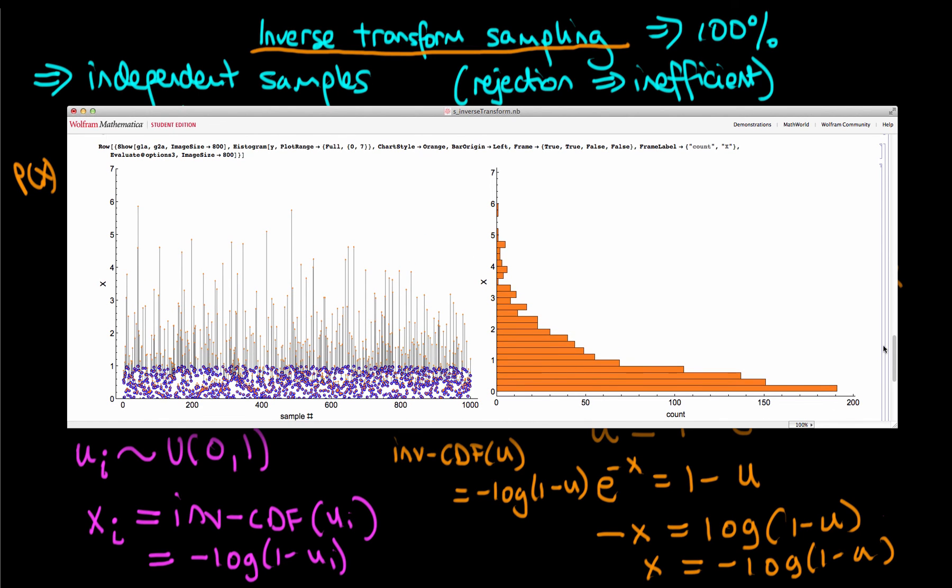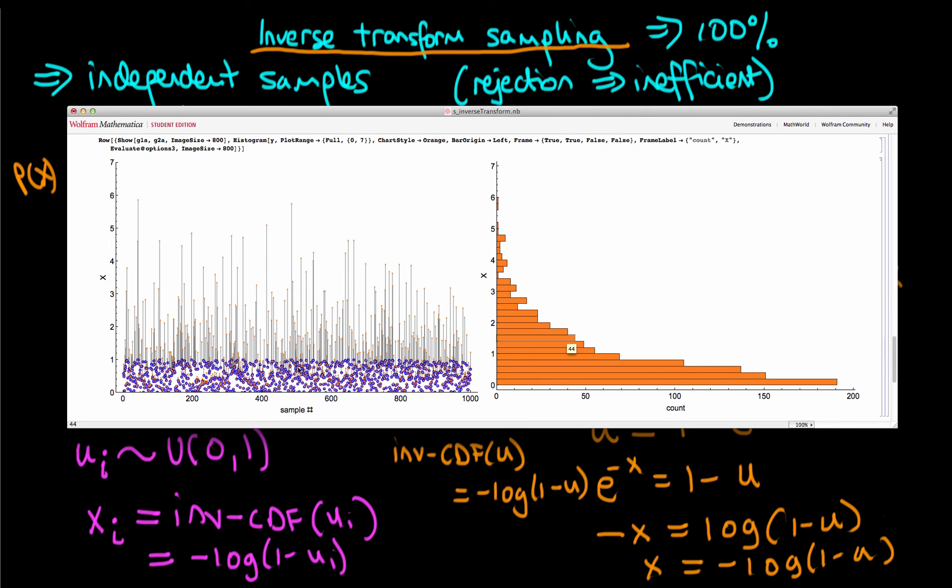If we run our sampler for much longer, now I've run it for a thousand iterations, we can actually see this. On the left hand side I've got all of our samples, both the blue u values which we sample uniformly between 0 and 1, and perhaps a bit small to see, but the orange crosses which correspond to each of those u values. You can see that the distribution of the orange crosses corresponds quite well to an exponential distribution. It's kind of downwardly sloping away from zero.